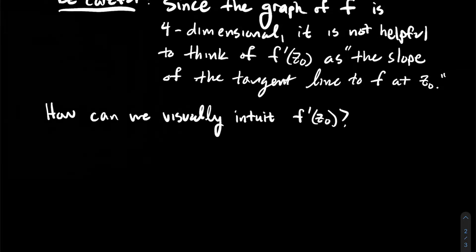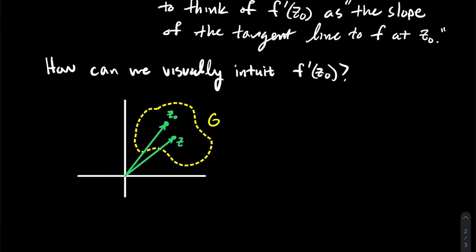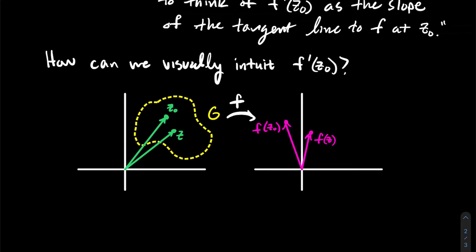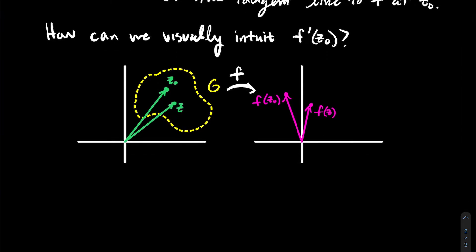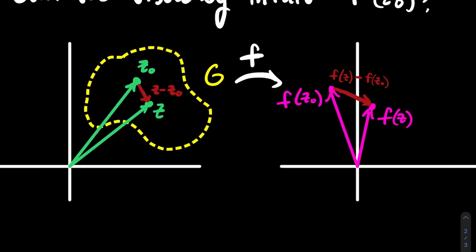So if you want a picture, let's draw one. Here's my domain G, and I'm taking two points inside it: z₀ and z. I'm drawing this in vector notation — thinking of complex numbers as vectors starting from the origin. We plug both into f, and the outputs land in another copy of the complex plane. I've got f(z₀) and f(z) there. What we're going to track is the difference between z and z₀ — that vector — and also the difference between the outputs — that red vector connecting the two outputs.